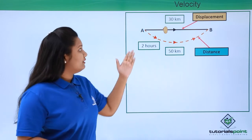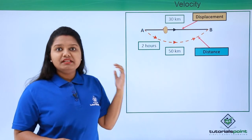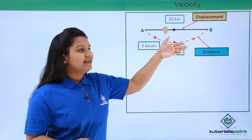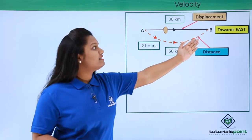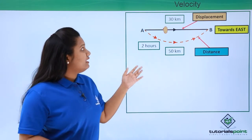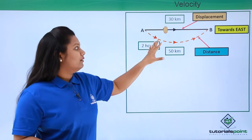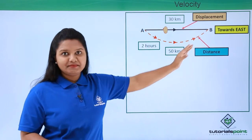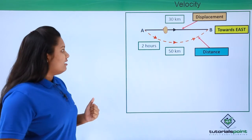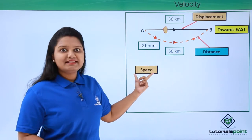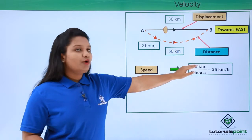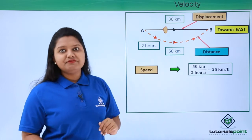Whenever we talk about velocity or displacement, we need to specify the direction of the body. In this case, the direction is east — the body is moving towards east. Now let us calculate speed: the speed of the body becomes total distance traveled divided by total time, that is 50 kilometers divided by 2 hours, which gives 25 kilometers per hour.